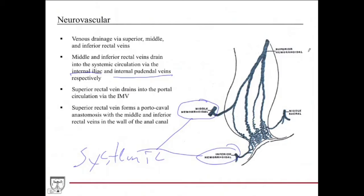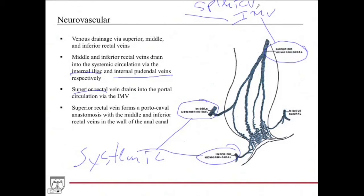What's important to note is the superior hemorrhoidal, also known as the superior rectal vein, drains into the portal circulation via the IMV — the inferior mesenteric vein. The inferior mesenteric vein joins the splenic vein to form the portal vein, so that drainage goes into the portal venous system.